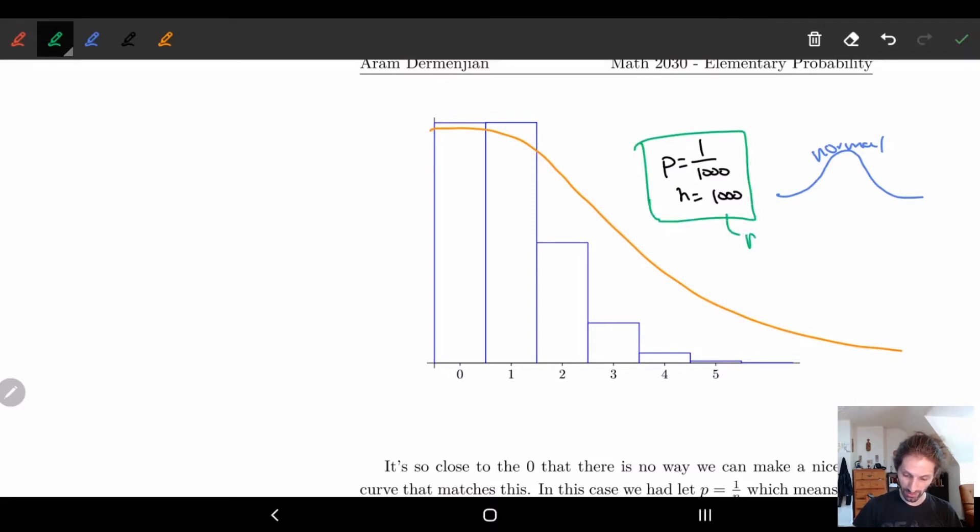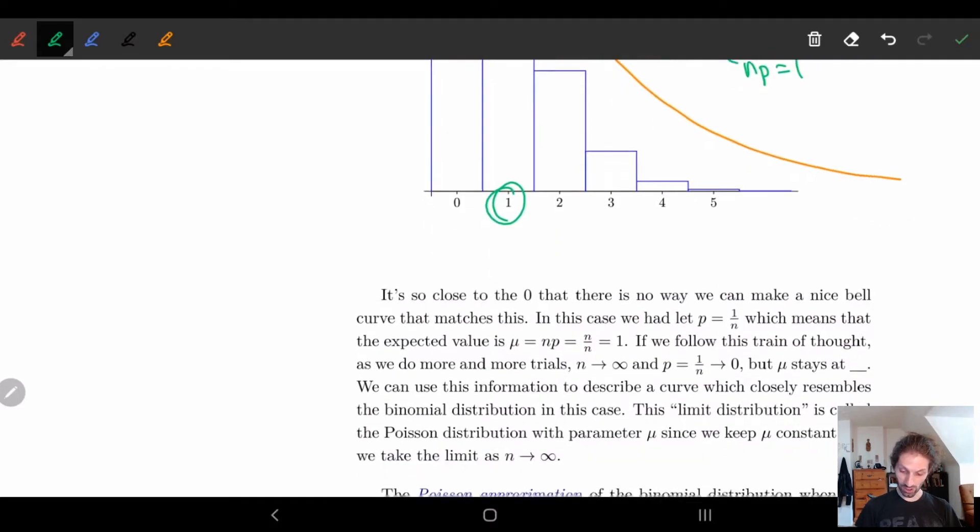So if I take this and do n times p, notice how I just get one. So if my n times p, my expected value, is really close to one then we're going to be able to use this Poisson distribution instead. This is really just the idea.